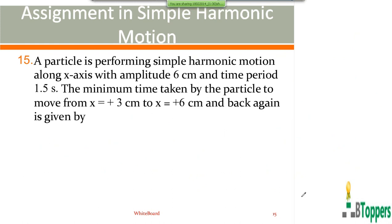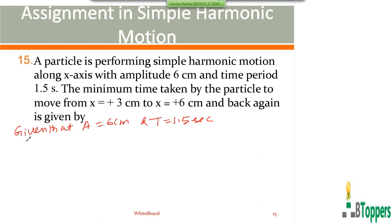See question number 15. A particle is performing simple harmonic motion along the x-axis with amplitude 6 centimeters and time period 1.5 seconds. Find the minimum time taken by the particle to move from x = +3 centimeters to +6 centimeters and back again.